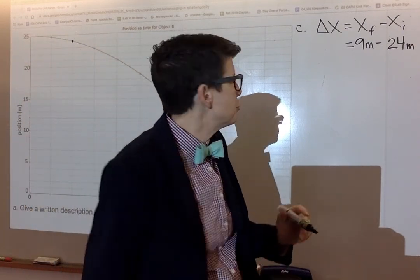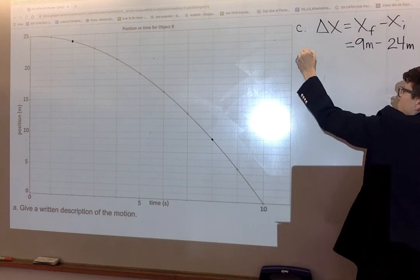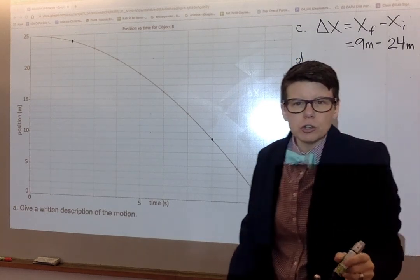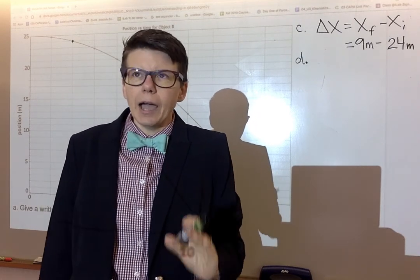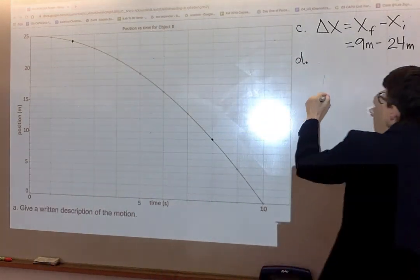Part D says find the average velocity. Again, I'm encouraging you to show your process because I think it will help you solve the problem. This is not busy work. Average velocity is defined as such.